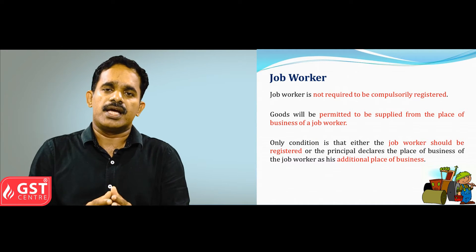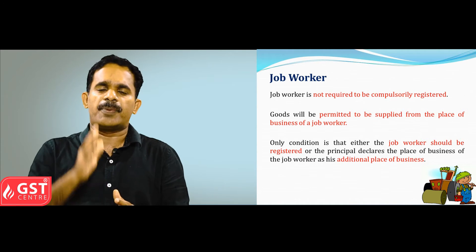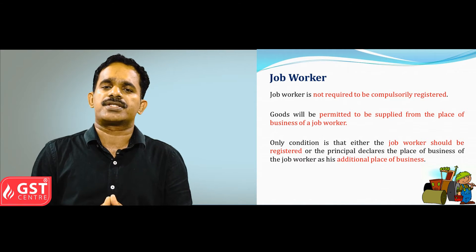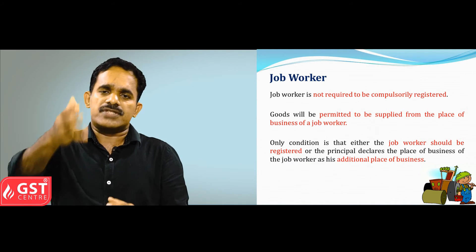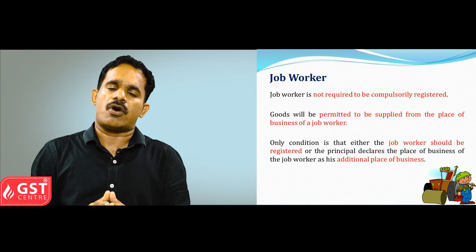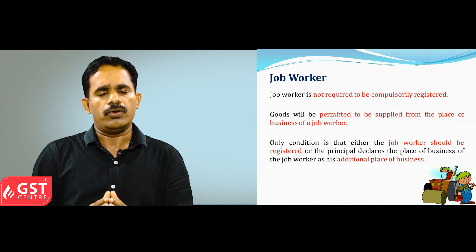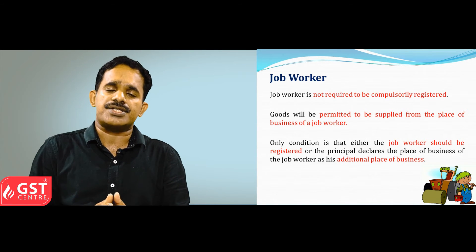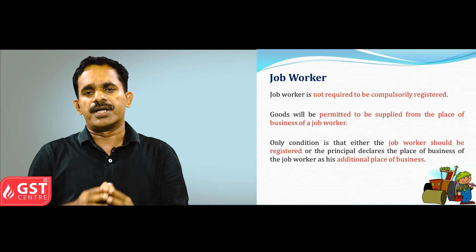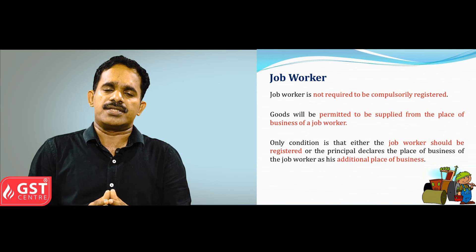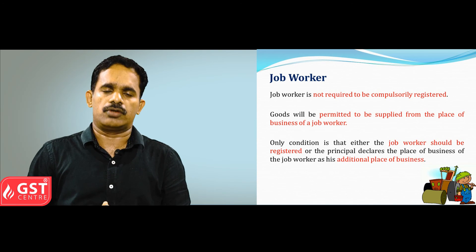A job worker is a person who undertakes any activity or process with goods supplied by the principal person. As per the GST law, a job worker is not required to compulsorily register for doing business, and goods can be transferred or supplied directly from the business place of the job worker. The only condition is that the job worker should either be registered as per the GST law, or be declared as an additional place of business by the principal taxable person. If the principal taxable person declares the job worker's business place as an additional place of business, the job worker is not required to register.